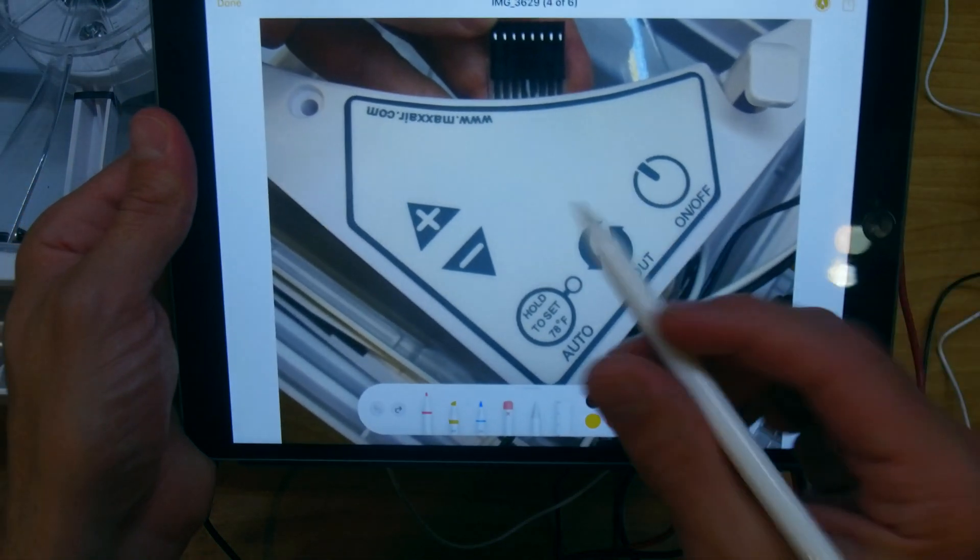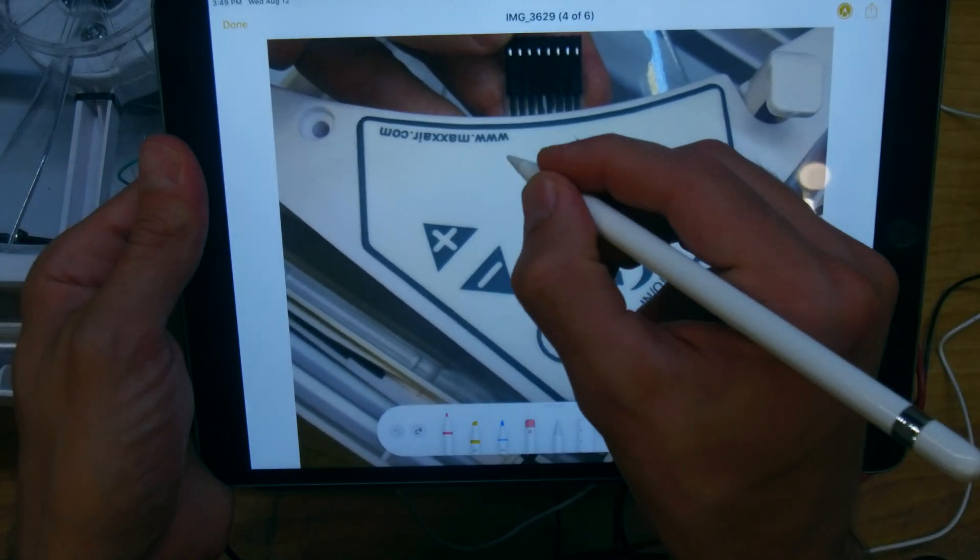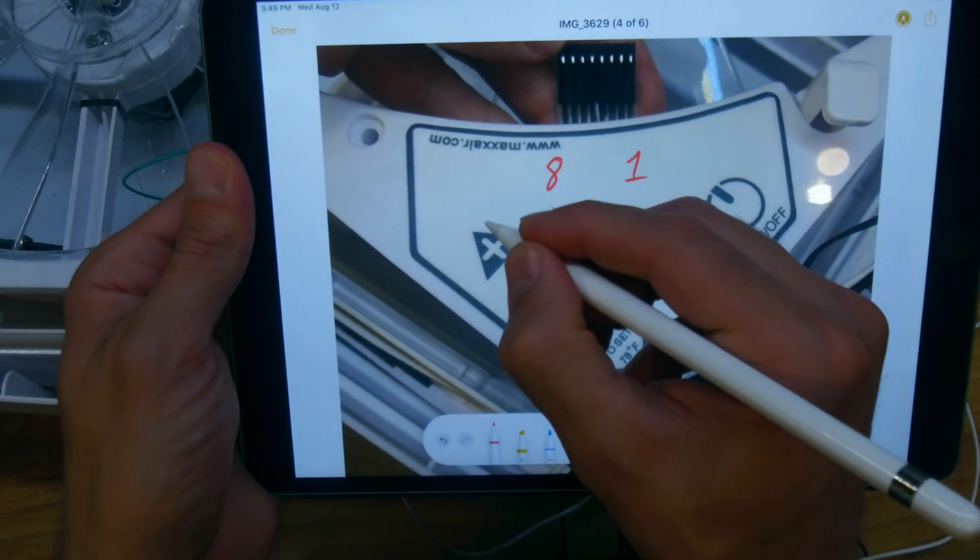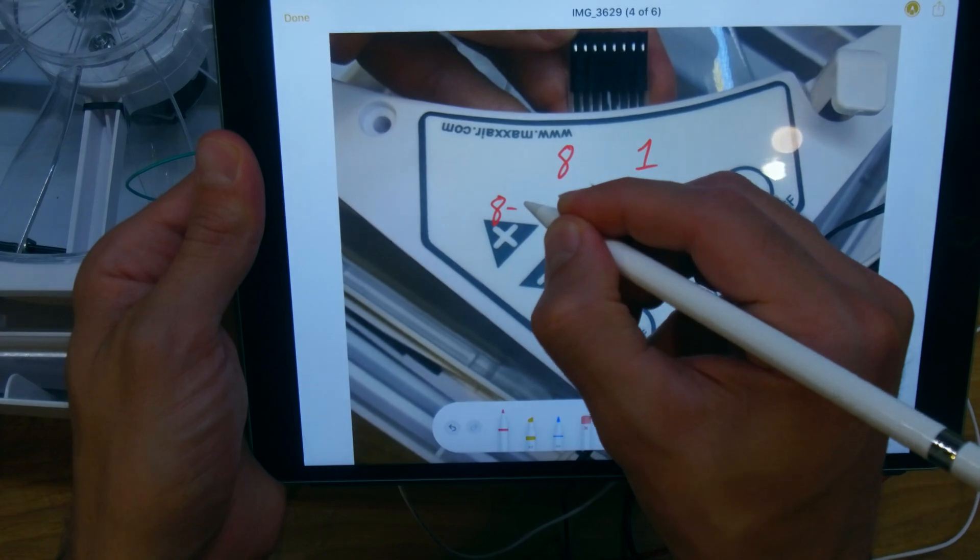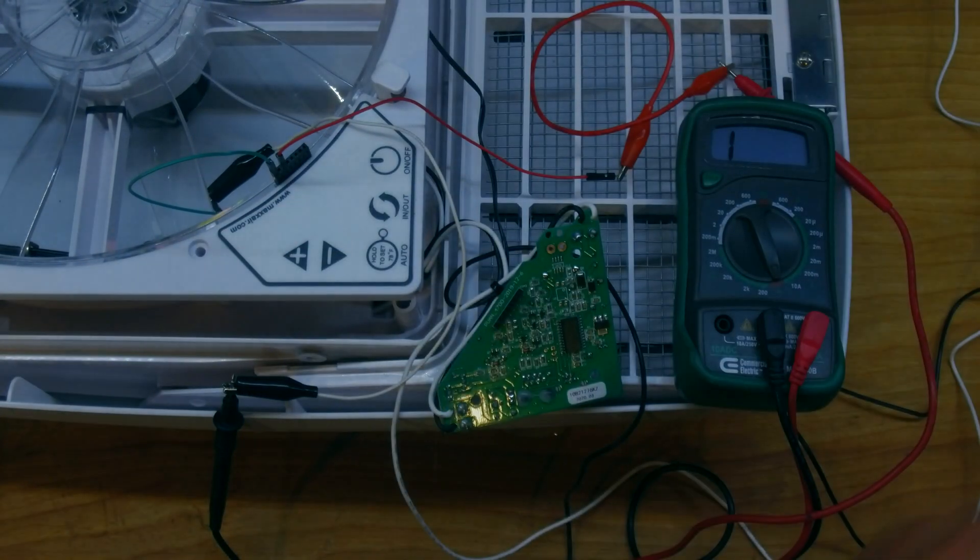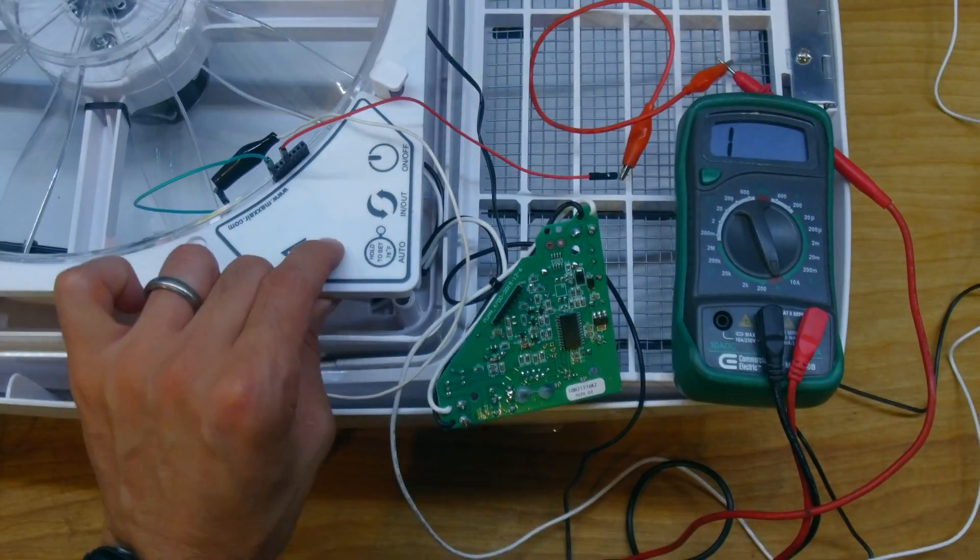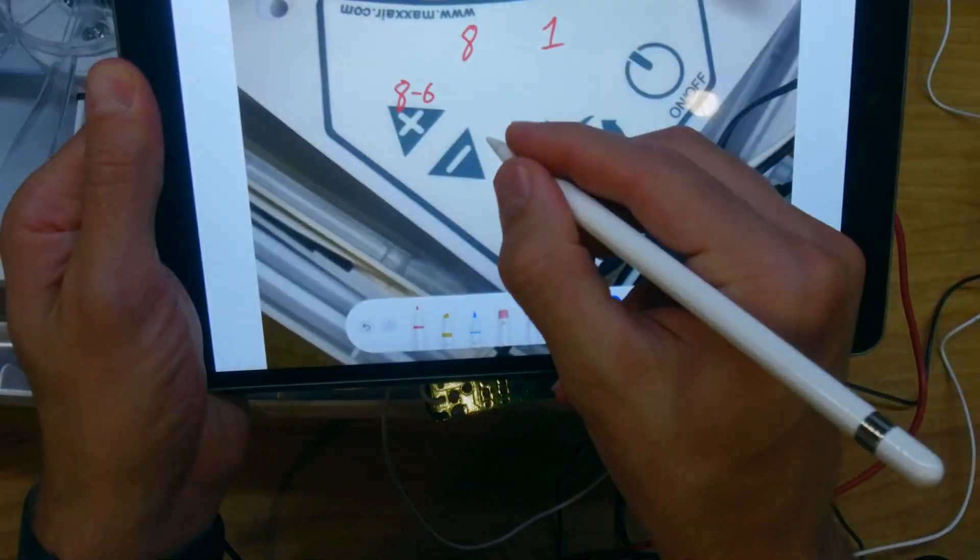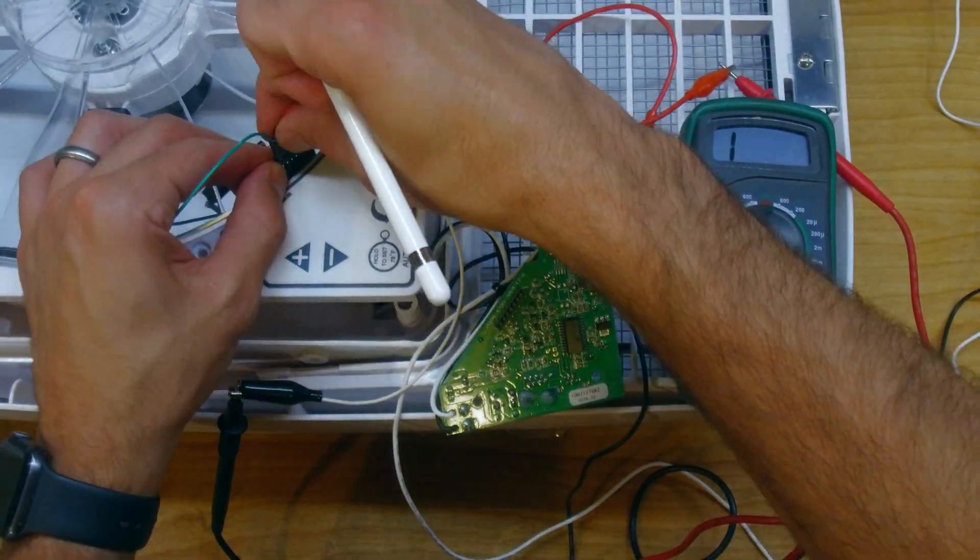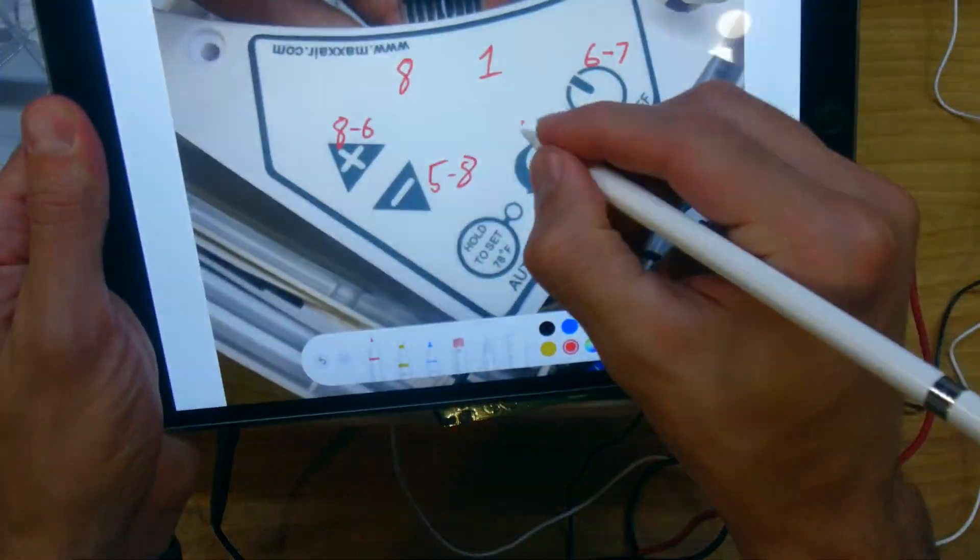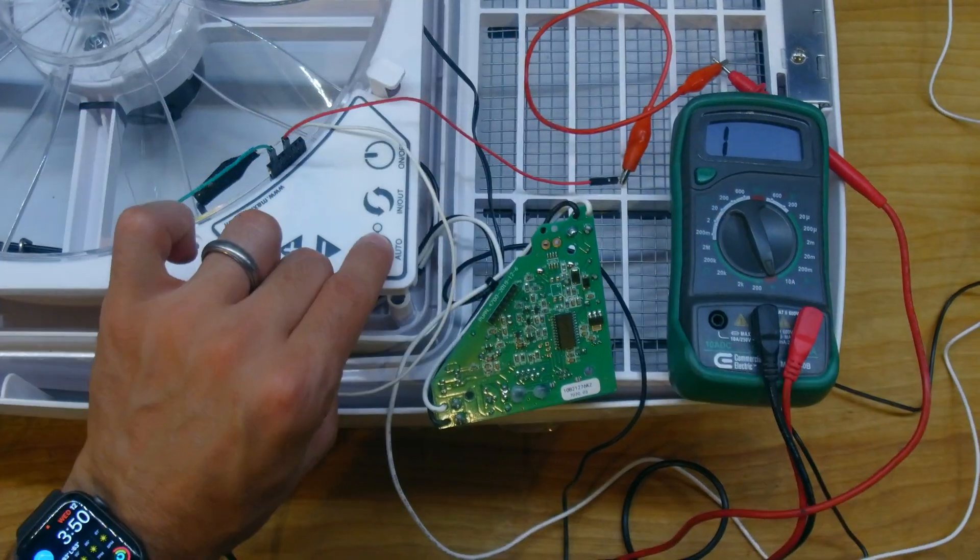I've got my iPad here with a picture of the panel, and I've got pin 8 over here and pin 1 here. For the plus button, we are connecting pin 8 to pin 6. Then we can move down. And now I just proceed through the rest of the buttons, testing out different combinations of pins based on educated guesses from what I can see in the traces. But where that fails, a little bit of brute force testing gets the job done.